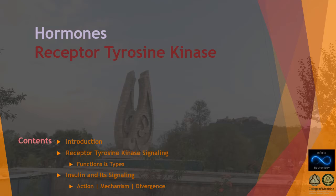In the series of biosignaling lectures, this is the seventh lecture. We'll be discussing receptor tyrosine kinase signaling, focusing on its function and various types of receptors available on the surface of the cell, and particularly focusing on insulin signaling and how it results in the divergence in metabolism control.